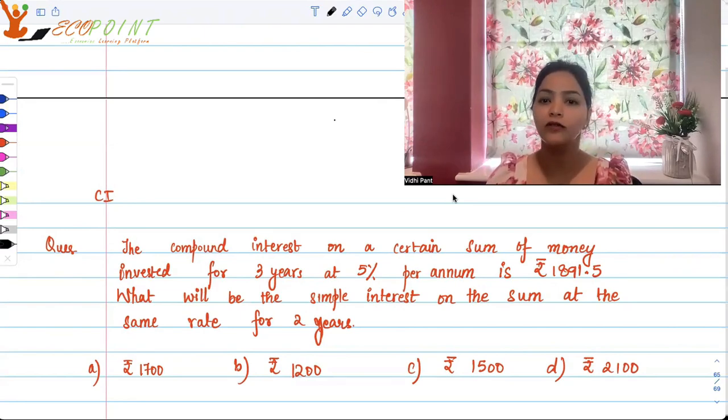The compound interest on a certain sum of money invested for three years at 5% per annum is 1891.5. What will be the simple interest on the sum at the same rate for two years?